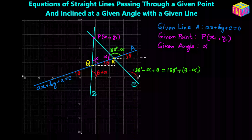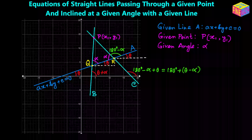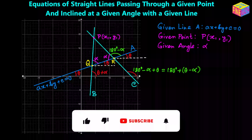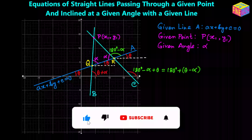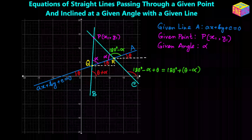In the diagram, the straight line in blue color I have named as line a. Let's assume that is the given straight line and its equation is a·x + b·y + c = 0. Let's assume it is inclined at angle theta with the positive direction of the x-axis, and the given point is P with coordinates (x₁, y₁). We have to draw two straight lines passing through P and equally inclined with line a.